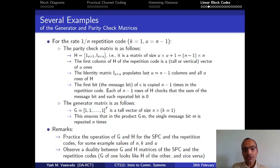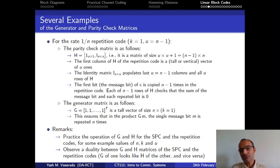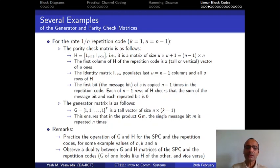To get a good handle on this, you should practice with paper and pencil the G and H matrices for some simple SPC and repetition codes. For example, take n equal to 5. For SPC, make k equal to 4 and u equal to 1. For the repetition code, make n equal to 5, k equal to 1, and u equal to 4. Working through such simple examples will give you a feel for why the G and H matrices are the way they are for SPC and repetition codes.